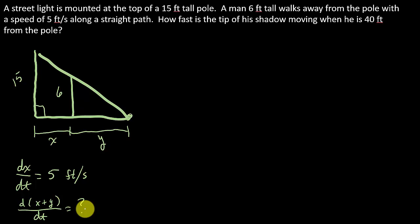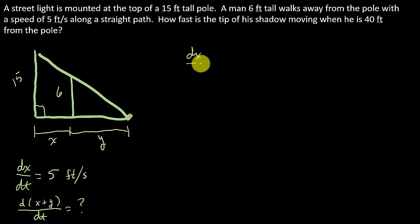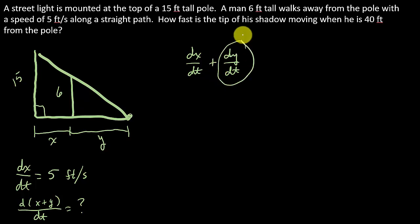They give us the change in X and they want to know when he's 40 feet from the pole how fast the shadow is changing. If we take the derivative of X plus Y, that would be dX/dT plus dY/dT. But we don't know anything about dY/dT. So what we're going to need to do is get X plus Y all in terms of X, and then when we take the derivative we'll have a dX/dT, and we know what that is.